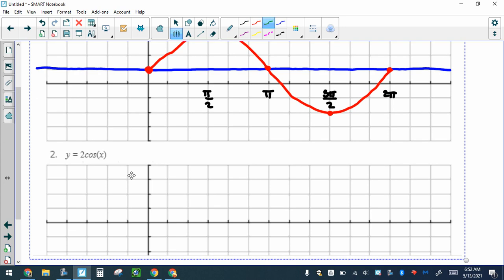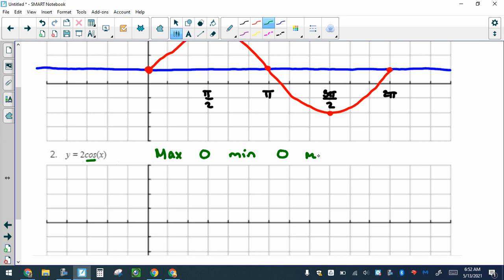The next one is a cosine graph. First off, cosine is max, 0, min, 0, max. Let me put the labels on again.